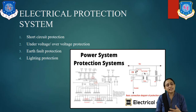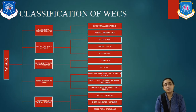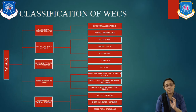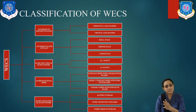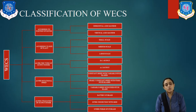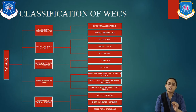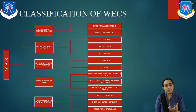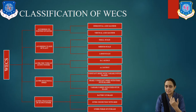Let us have some classification of WECS — Wind Energy Conversion System. It has various parts, so we classify it. First, according to the position of the rotor: horizontal axis and vertical axis. Second, according to the size of the plant: small scale, medium scale, and large scale.